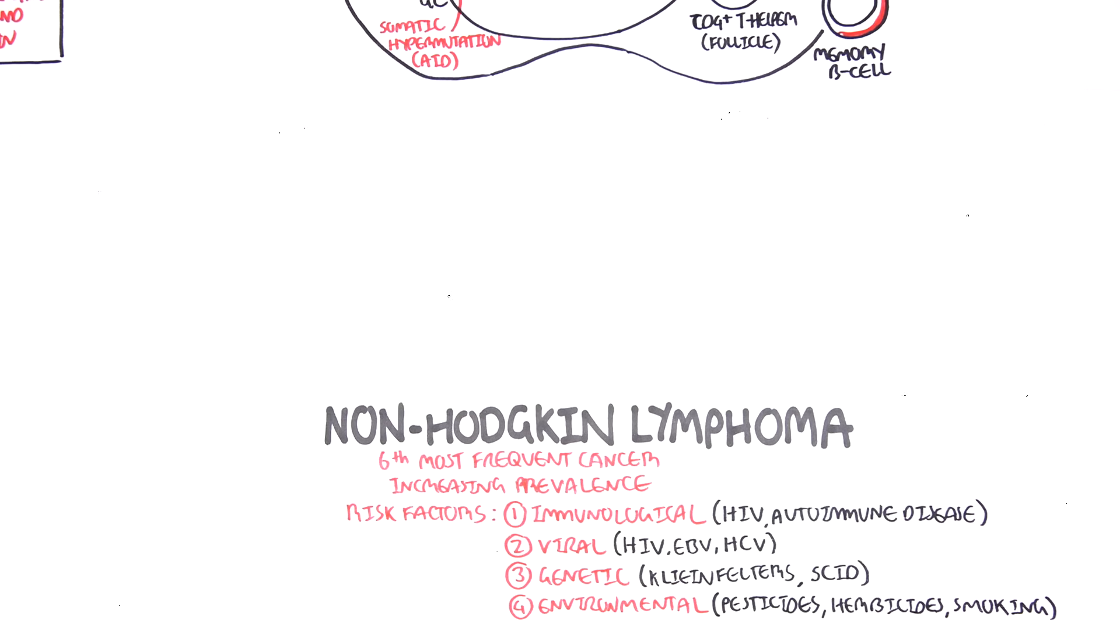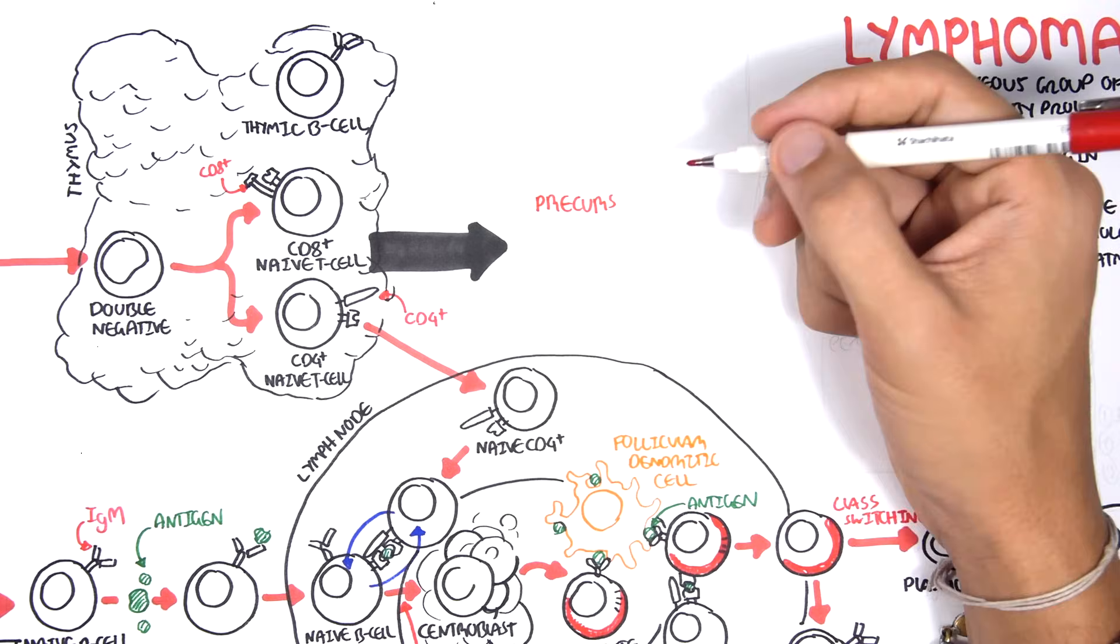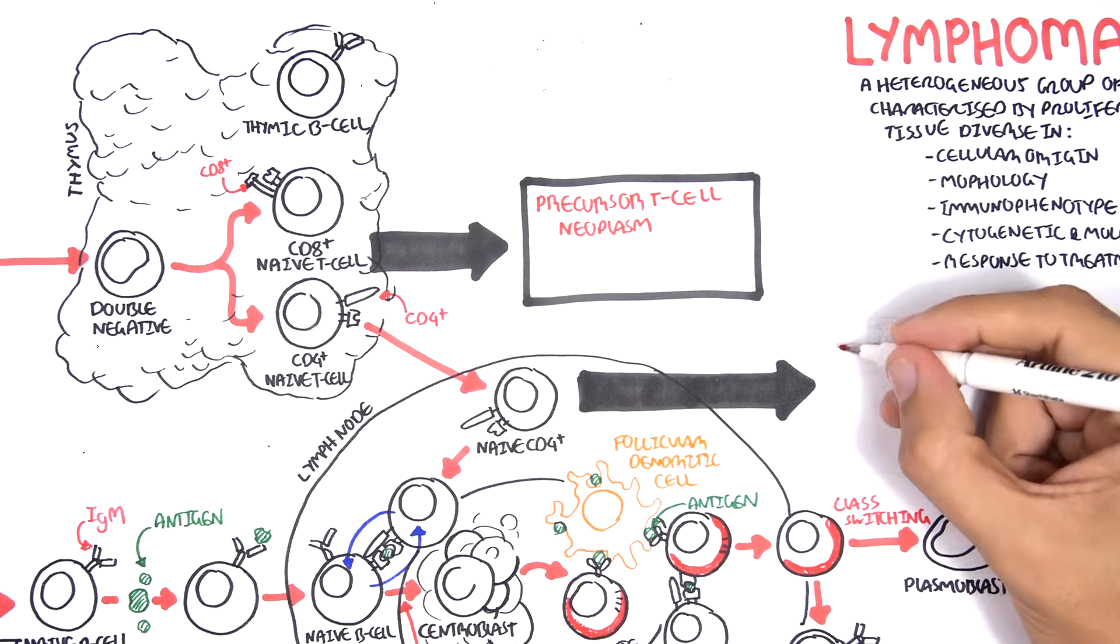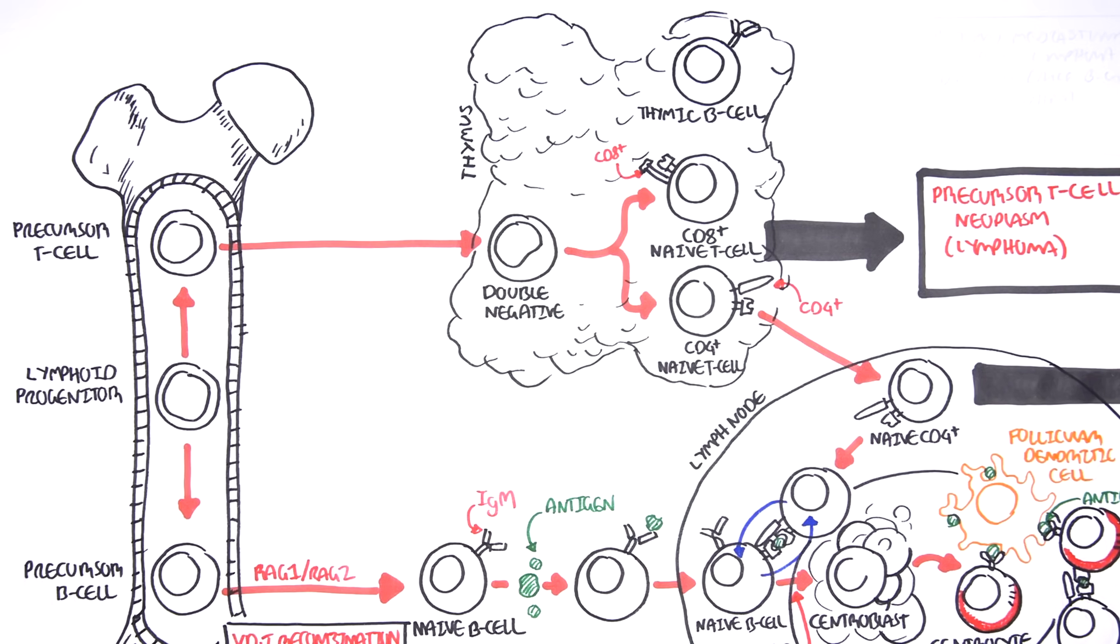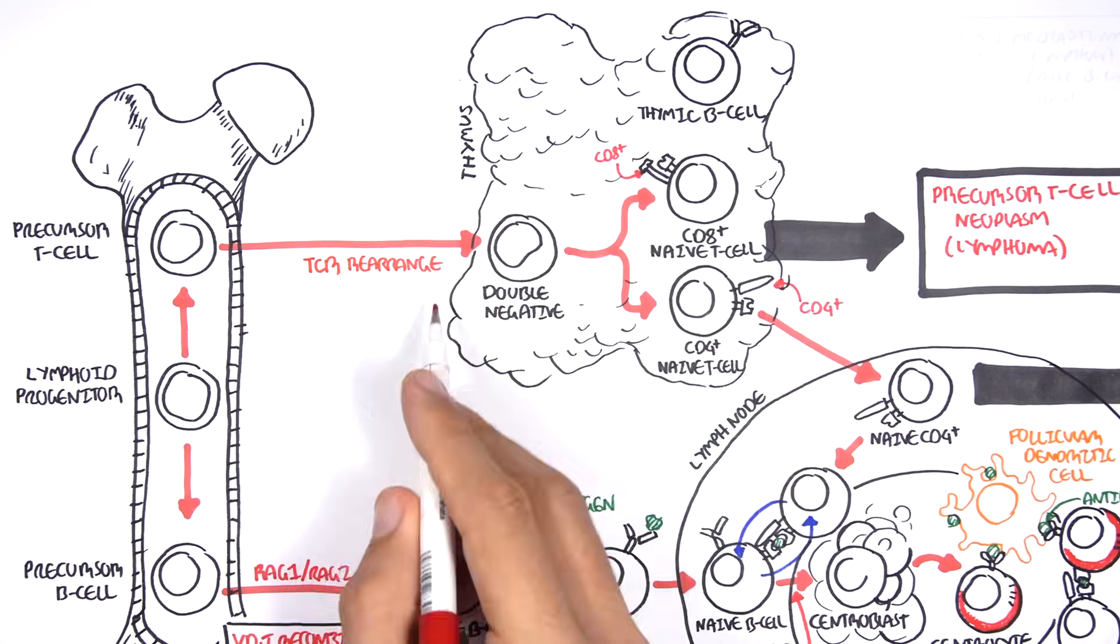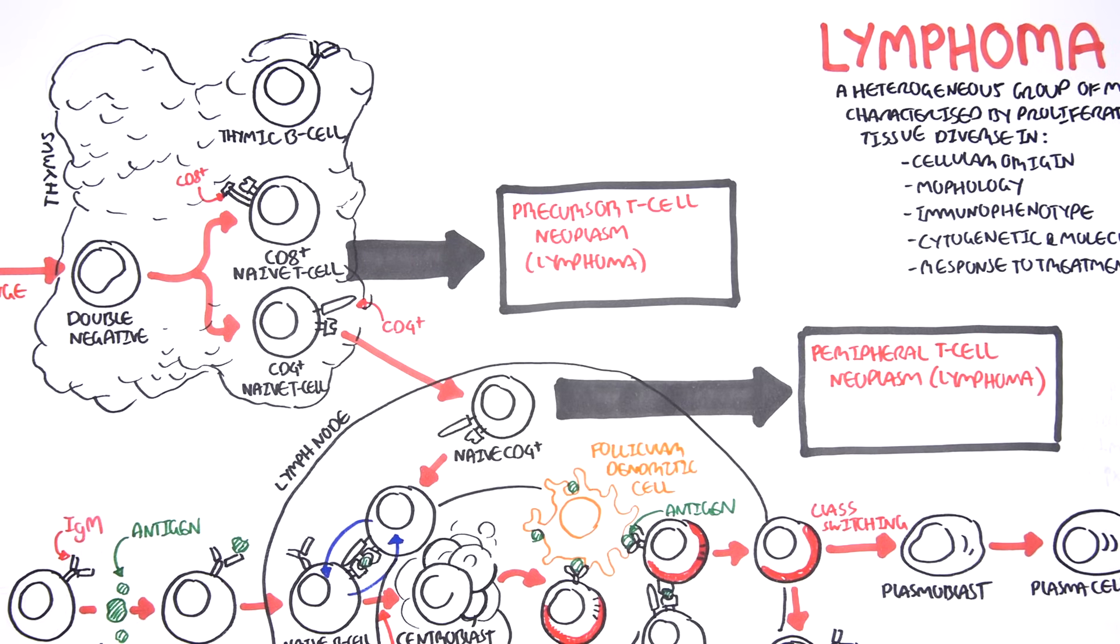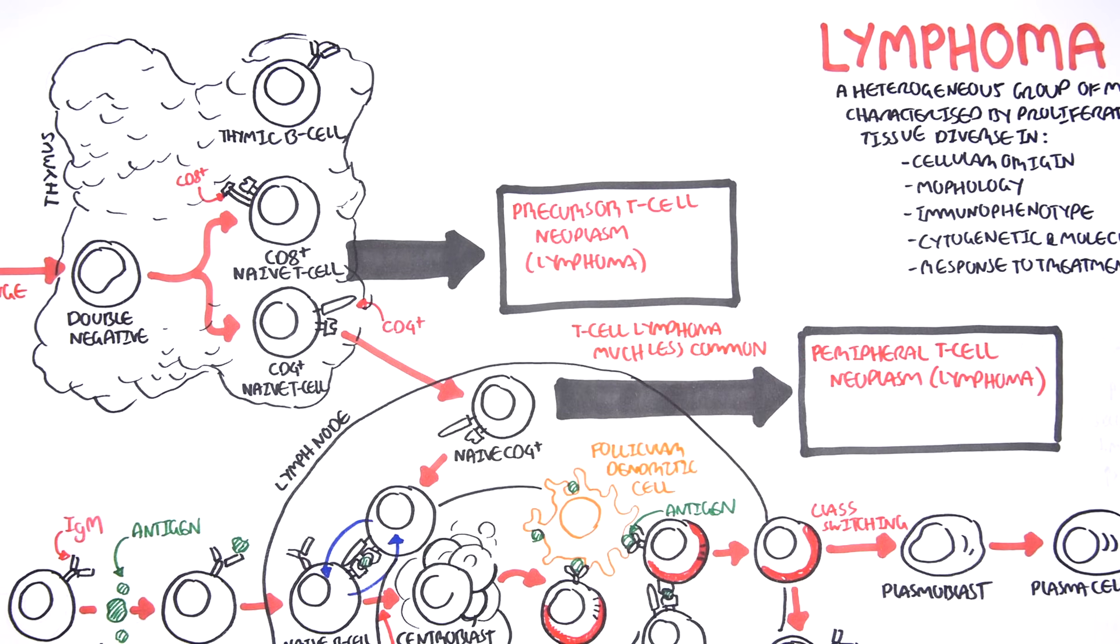Now let us look at the different types of non-Hodgkin's lymphoma and where they can arise from. Non-Hodgkin's lymphoma can either be B-cell or T-cell in origin. We will first look at T-cell non-Hodgkin's lymphoma. T-cells in the thymus during development can give rise to precursor T-cell lymphomas. T-cells that have moved into the lymph node can give rise to peripheral T-cell lymphomas. T-cell lymphomas can arise during genetic rearrangement of the T-cell receptor and during positive and negative selection in the thymus. What is important to know is that T-cell lymphomas are less common than B-cell lymphomas.